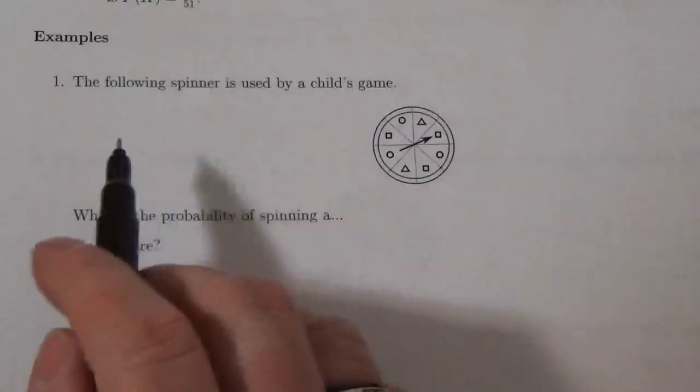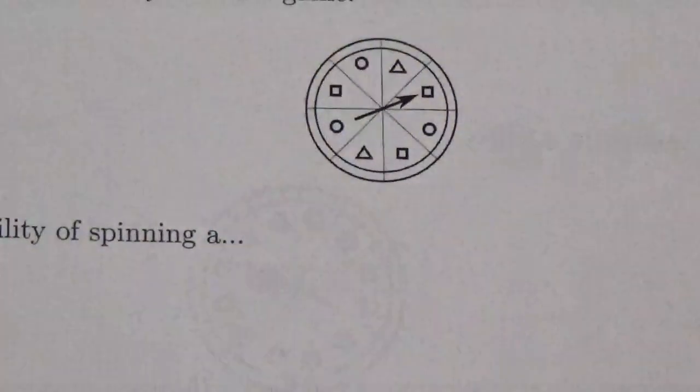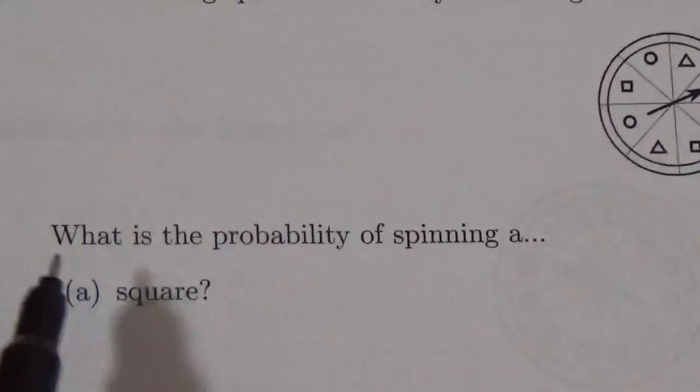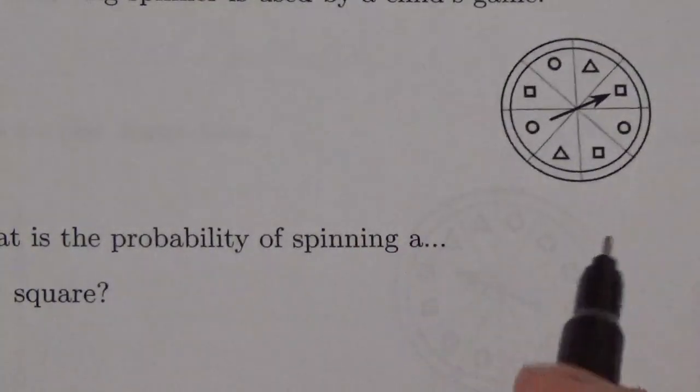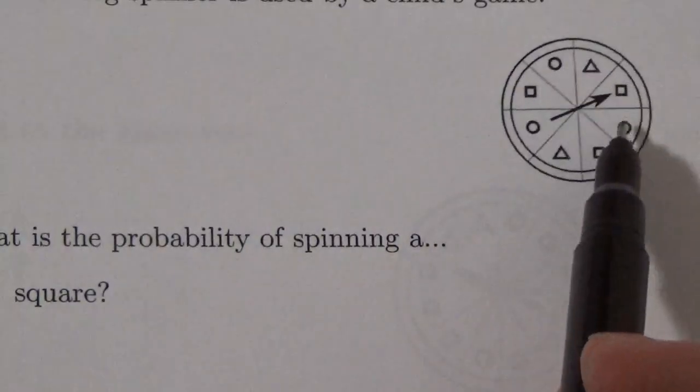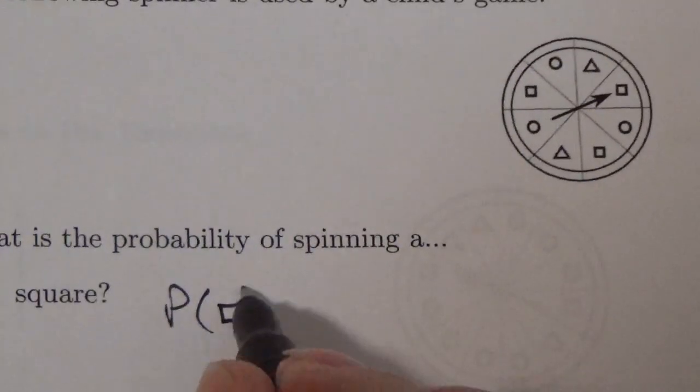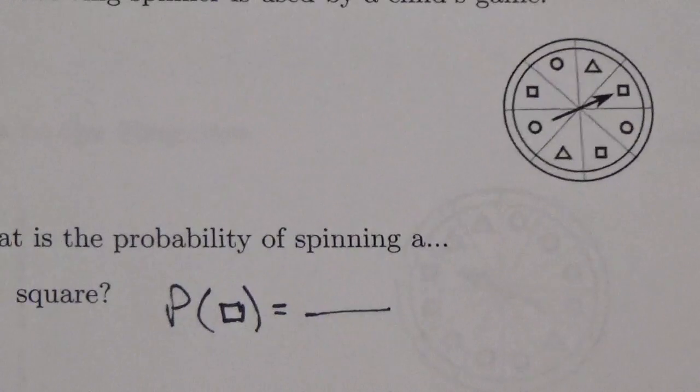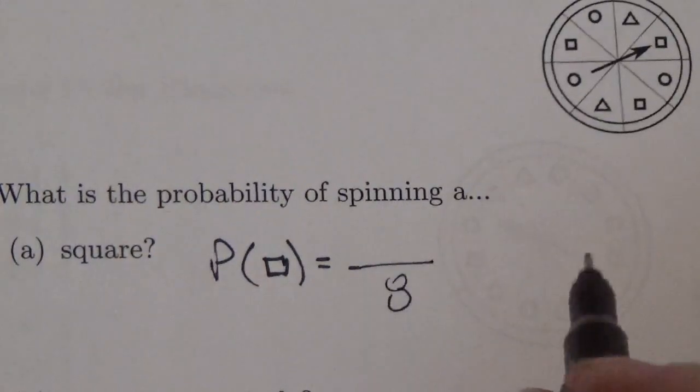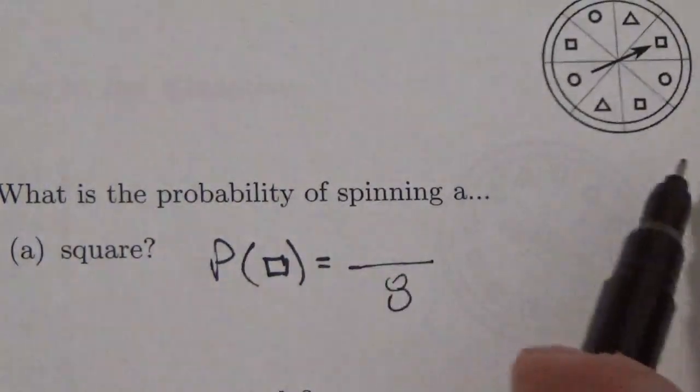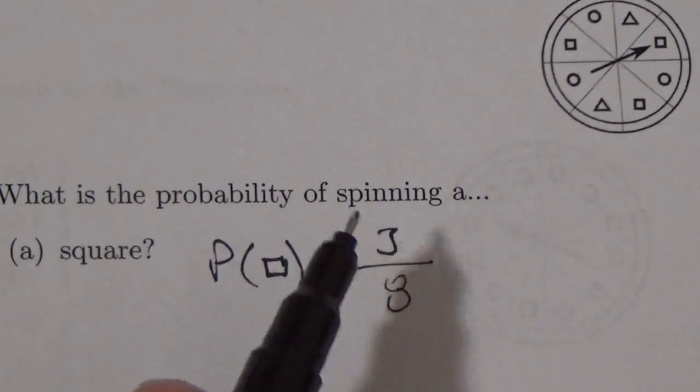Let's have a look at this example. The following spinner is used in a child's game. The first question is, what's the probability of spinning a square? I've got 1, 2, 3, 4, 5, 6, 7, 8 possible outcomes. How many of them have squares on them? 1, 2, 3. So the theoretical probability of getting a square is 3 out of 8.